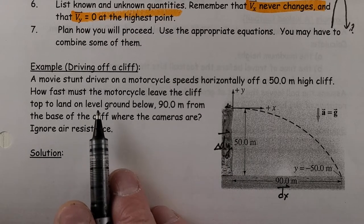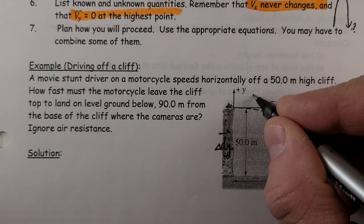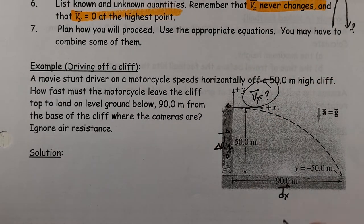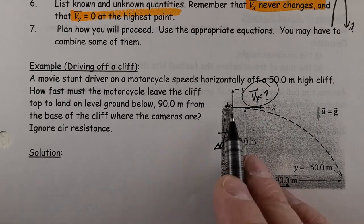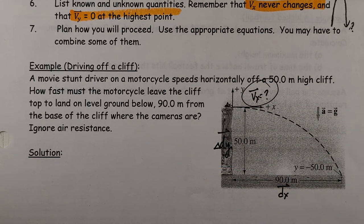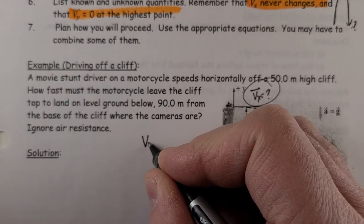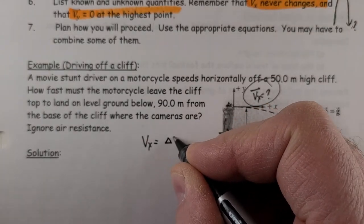How fast must the motorcycle be traveling for this to happen? In other words, you're looking for vx. Now, in order to figure out vx, we know it's going to be constant because anything in the horizontal direction is constant.